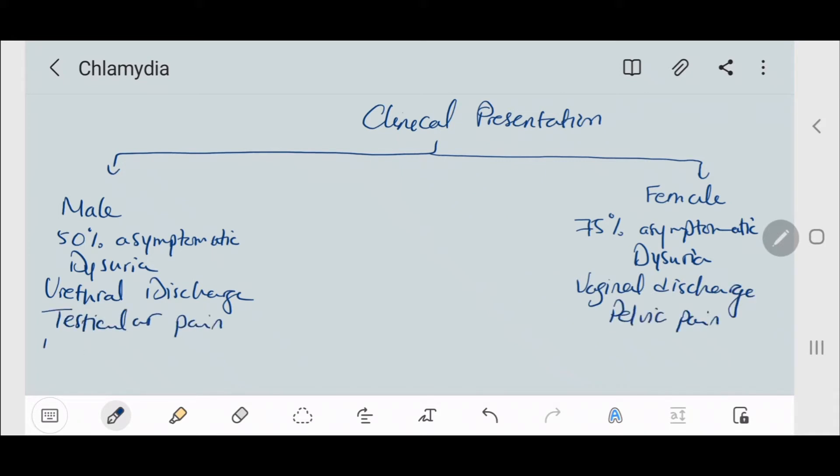Testicular pain in males, pelvic pain in females, anorectal symptoms could be present in both, and specifically for females intermenstrual bleeding and post-coital bleeding.